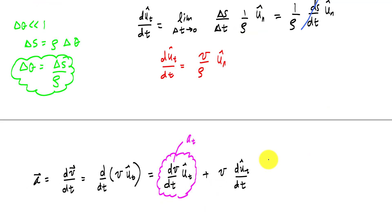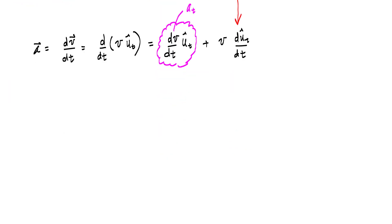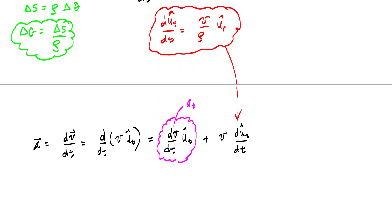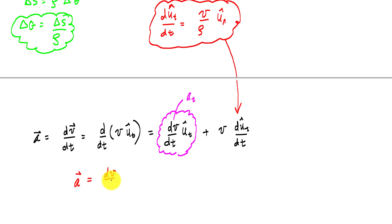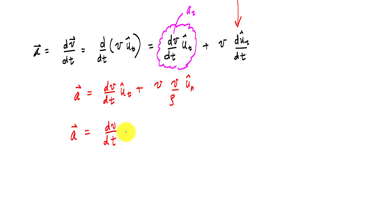So now if I take this definition of the time derivative of the tangential unit vector right here and I substitute into here, then I will get that my acceleration vector a is dv/dt u_t hat plus v times v over rho u_n hat, which really just gives me all my components here. This and this, my a_t component, and this is my a_n component.